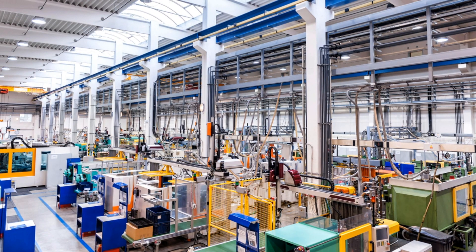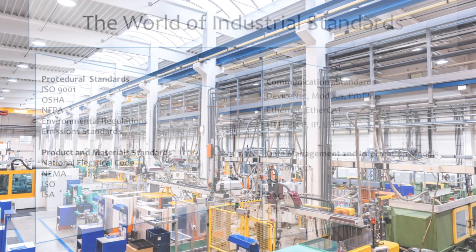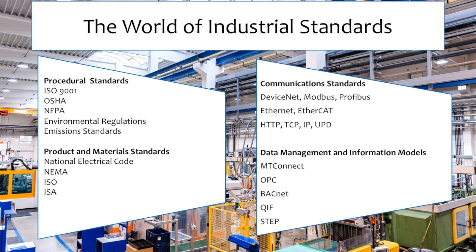In the manufacturing world, there are diverse types of standards. Procedural standards define the processes and procedures used in the production of products. They also address the safe operation of equipment, protection for employees, and protection for the environment. There are also standards that regulate the design and functionality of the products produced, and the materials used to produce those products. Part of that functionality includes communication standards. Much of the equipment used on the shop floor can exchange information with other pieces of equipment, and this data communication can create obstacles for manufacturers.